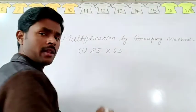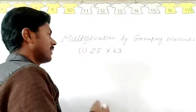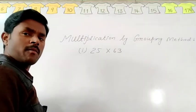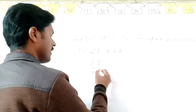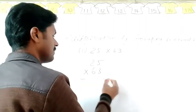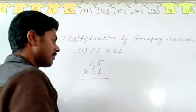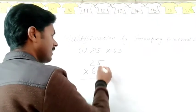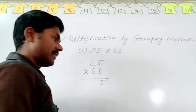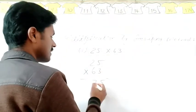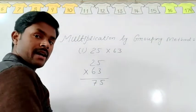First of all, I am going to multiply 25 and 63 with a normal method. When you multiply 25 and 63 by simple method, then first of all you have to multiply 3 and 5. 3 times 5 is 15 and carry 1. 3 times 2 is 6 and 1 is 7. After that, you have to leave one digit from right side.